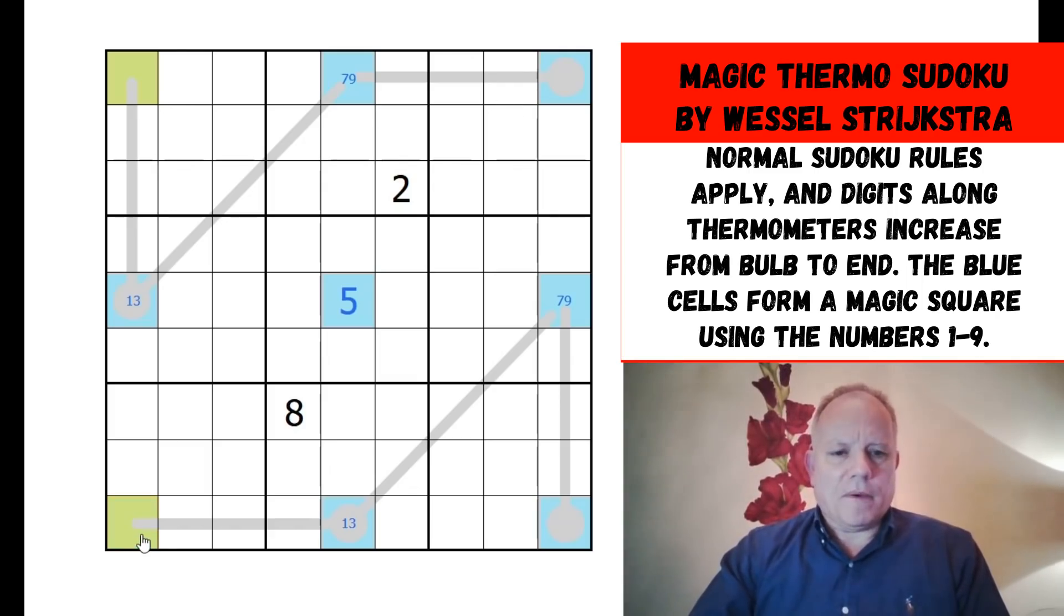Now that means the numbers on the corners are 2, 4, 6, and 8, the even numbers. So the ones at the end of the thermometer again can't be 2 or 4 because these thermometers are all 5 cells long, so they must be 6 and 8 on the ends. These at the beginnings must be 2 and 4.